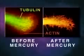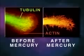Shown here is a neurite growth cone stained specifically for tubulin and actin, before and after mercury exposure. Note that the mercury has caused disintegration of tubulin microtubule structure.